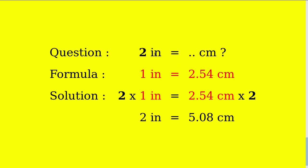And then because the number in the question is two, you need to put this number on the left side of the equal sign and on the right side of the equal sign. So now we have two times one inch equals 2.54 centimeters times two, which equals 5.08 centimeters.